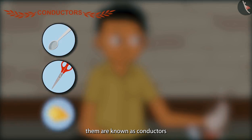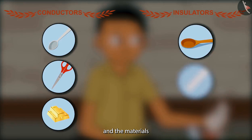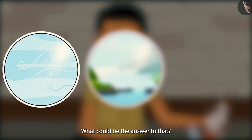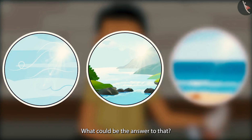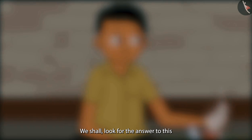The materials which let heat pass through them are known as conductors, and the materials which do not allow heat to pass through them are known as insulators. Ravi asked a question — what could be the answer: are air and water conductors or insulators? We shall look for the answer to this in the next video. We shall meet soon!